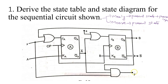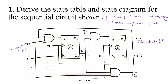Looking at the logic diagram, Y is the output. If you see Y, the input is obtained from B, A-bar, and X. X is the present input, and B is the present state. So we can identify that this is a Mealy model, as the output is dependent on the present state as well as the present input.